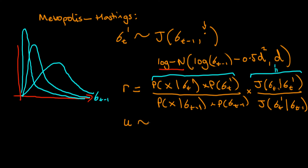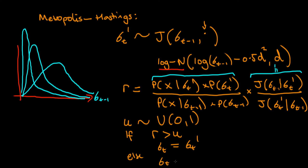We then sample a value of u from a uniform distribution between 0 and 1. Just like in the Metropolis algorithm, if r is greater than u, then sigma_t equals sigma_t'; otherwise sigma_t equals sigma_{t-1} — in other words, we don't move. The benefit of this algorithm over the two previous methods is that it takes the best of both: it never proposes a sigma less than zero, giving a better ratio of accepted to rejected proposals compared to the standard normal proposal. And it is guaranteed asymptotically — at infinite sample size — to converge to the true target density, making it an unbiased estimator, unlike the rejection sampling approach.